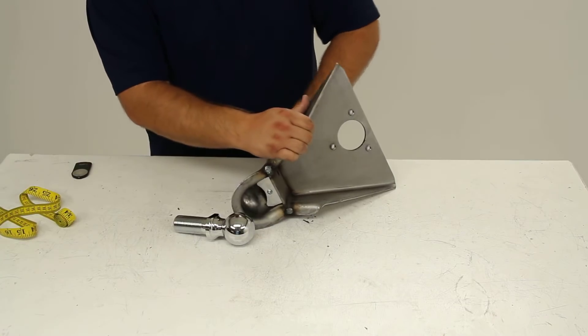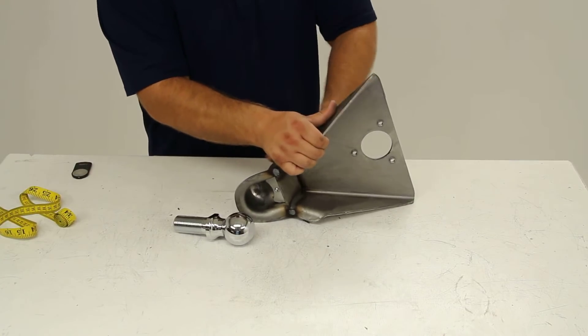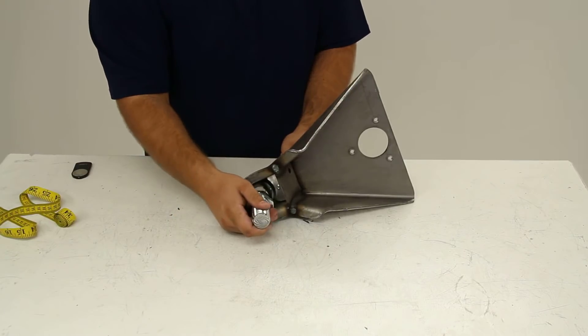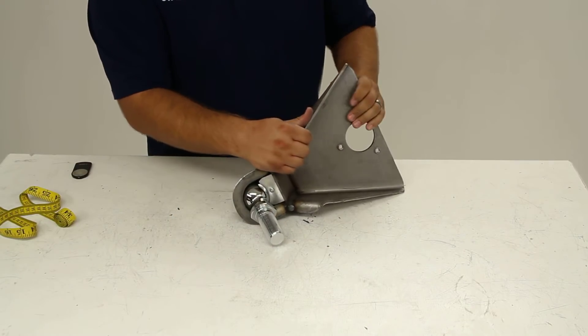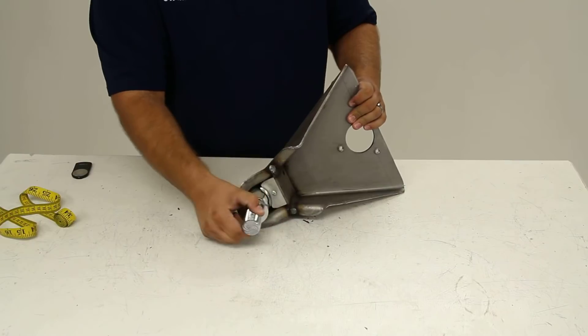We'll pull up our release trigger, open the latch and then we can fit our ball into place. The latch closes and the wedge moves down securing the ball.